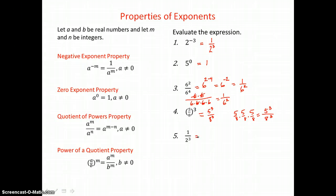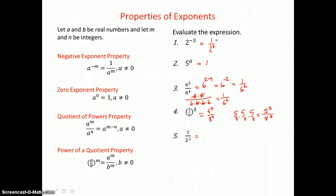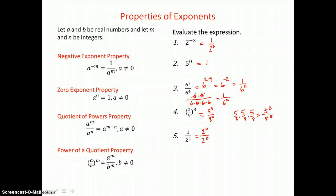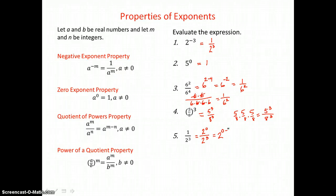In example 5, we're going to show that when we changed 2 to the negative 3rd power, we got 1 over 2 to the 3rd power. So we start with 1 over 2 to the 3rd power. I'll change that 1 to 2 to the 0 power, because anything to the 0 power has a value of 1. Then in this quotient, I'm dividing like bases, so I subtract exponents using our quotient of powers property. So I have 2 to the 0 minus 3 power, which simplifies to 2 to the negative 3rd power. So 2 to the negative 3rd power does equal 1 over 2 to the positive 3rd power.